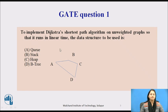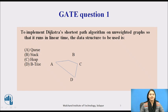To implement the shortest path algorithm on an unweighted graph so that it runs in linear time, what data structure will be used? Here four data structures are given: Queue, Stack, Heap, and B-tree.